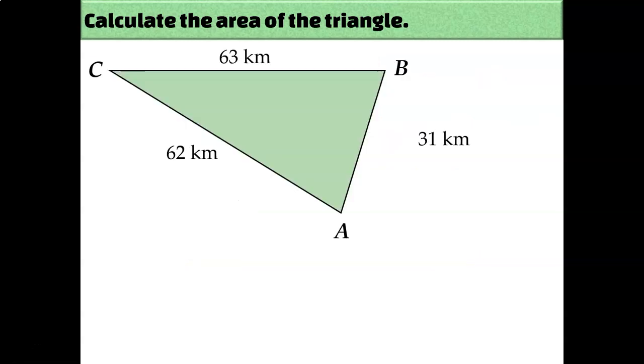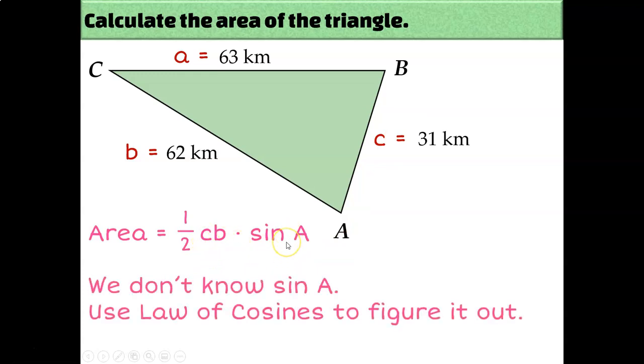But what if you're not given the correct measurements? In this case, I don't know any of my angle measures. I only know my side lengths. I know that little a would be 63 kilometers, little b is 62 kilometers, and little c is 31 kilometers. So thinking about my area formula, I have little c and I have little b, but I don't have big A. So since this is a side-side-side situation, I need to use the law of cosines to calculate the measure of angle A.